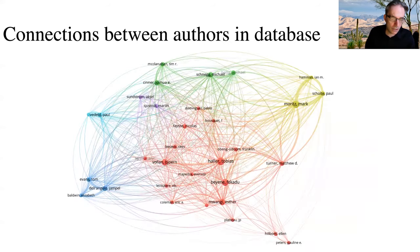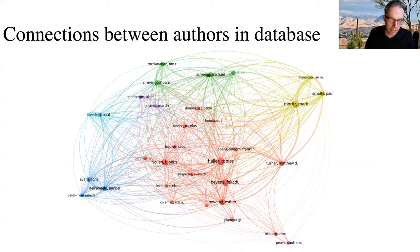Using the software VOSviewer, we created a network of authors connected if they cite the same articles. Authors who are more similar in connections share the same color compared to authors with other colors. We see that some colors represent long-standing collaborations of authors doing similar work, such as yellow on pastoralism or dark blue on water towers in Kenya.